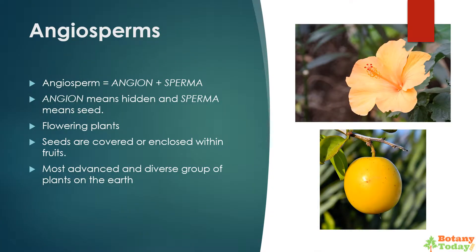Angiosperms: The word angiosperm is made from two words — angion, which means hidden, and sperma, which means seed. These are flowering plants. They have seeds enclosed within fruits, and are the most advanced and diverse group of plants on earth.